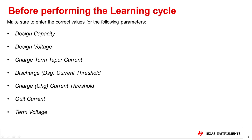Before performing the learning cycle, make sure to enter the correct values for the following parameters: design capacity and design voltage, both of which can be found on the cell label or datasheet. For charge termination taper current, it is recommended that the taper current be between C/100 and C/10 to ensure that the battery gets properly fully charged.